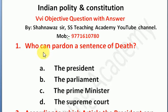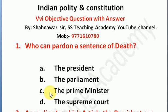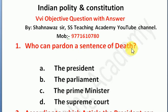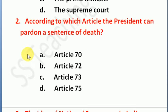First question: who can pardon a sentence of death? Option A: the President, Option B: the Parliament, Option C: the Prime Minister, Option D: the Supreme Court. The right answer is Option A, the President can pardon a sentence of death.